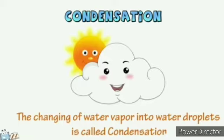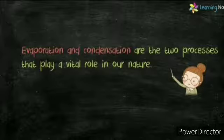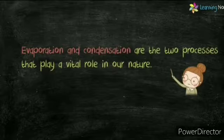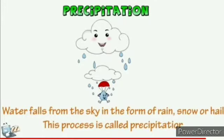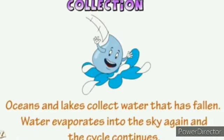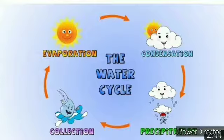The second process is condensation — the changing of water vapor into water droplets is called condensation. Evaporation and condensation are two processes that play an important role in nature. The third process is precipitation: water falls from the sky in the form of rain, snow, or hail. The fourth step is collection: oceans and lakes collect water that has fallen, and the water evaporates into the sky again, and this cycle continues.